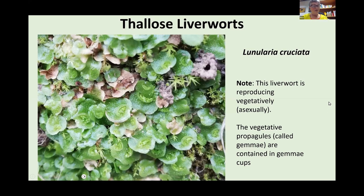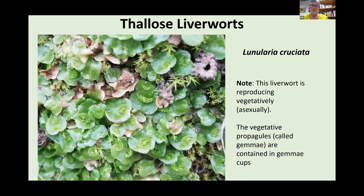One interesting feature of all bryophytes is that they often reproduce asexually. Instead of producing a sporophyte through fertilisation, they just produce bits of themselves that can fall onto the substrate and reproduce a whole plant — a complete genetic clone of the mother plant. In this example, Lunularia cruciata has so-called gemmae cups, and gemmae is the name given to the discoid reproductive structures inside the cup. That's one example of vegetative propagation.